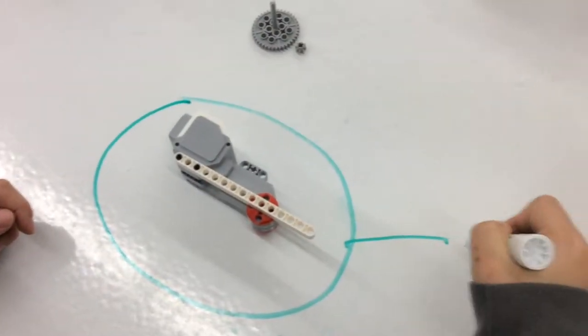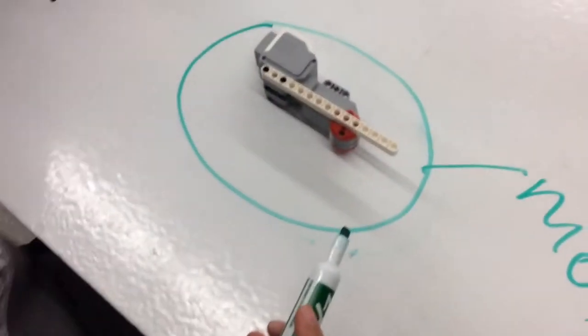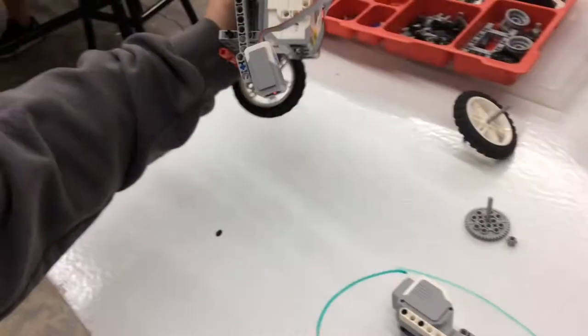So this right here, this is the motor. And it obviously propels our drag racer over here, which has the motor taken off.